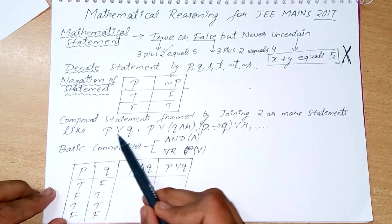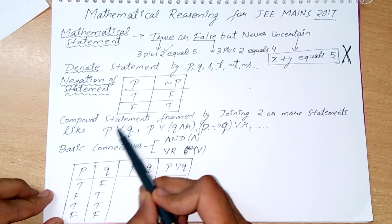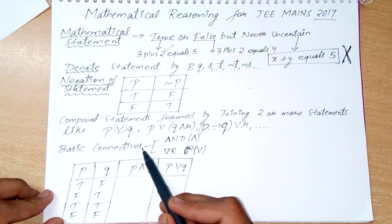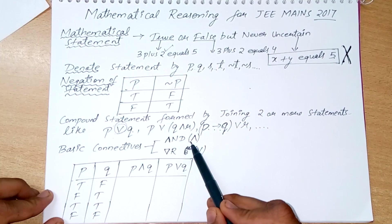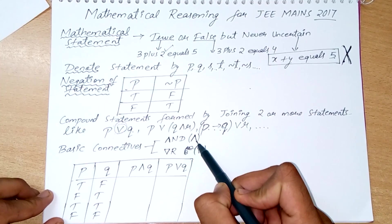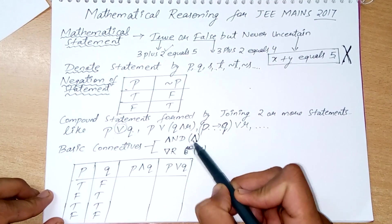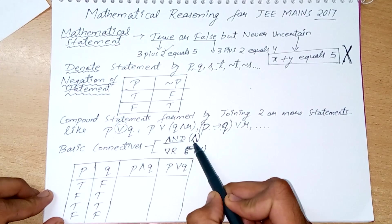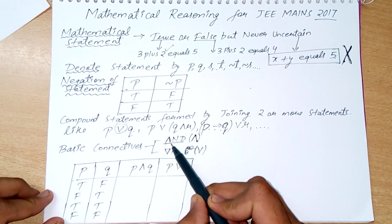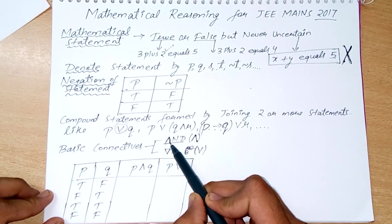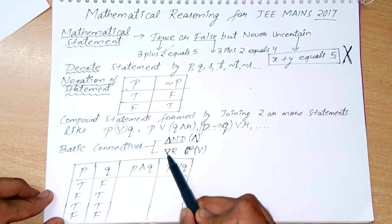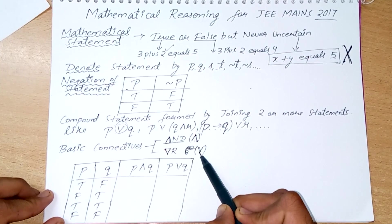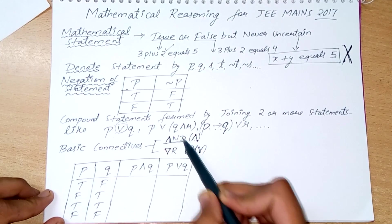Compound statements are formed using connectors. Some basic connectors are AND (∧) and OR (∨). I have written them such that you can remember which symbol means what.